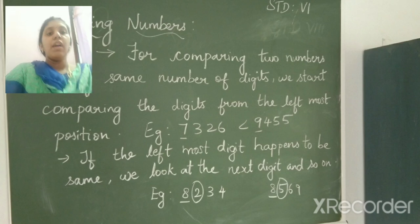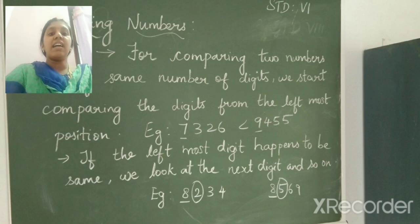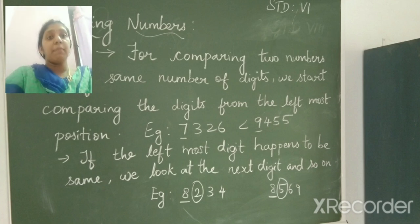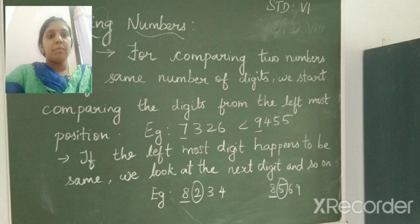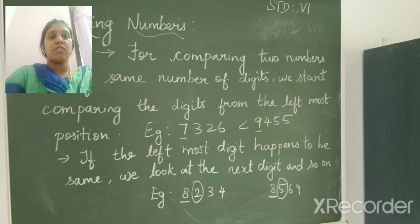Now for comparing two numbers having same number of digit, we start comparing the digits from the left most position. So we have to compare two given numbers of same number of digits. If the numbers are of same digit, then we have to look at the number on the left most position. So here in the example given, it is 7 and 9.